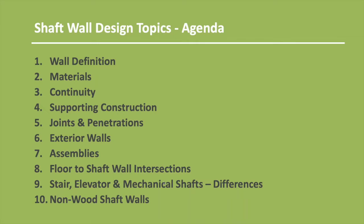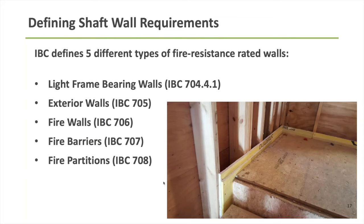Here's a list of topics we'll go through. Most will go pretty quickly, and we're really going to focus on the front end: what are the code requirements? Then toward the latter half: what are the detailing options to help meet those code requirements? Turning to Chapter 7 of the International Building Code, we'll see that there are five defined types of fire resistance rated walls: load-bearing walls, exterior walls, fire walls, fire barriers, and fire partitions.